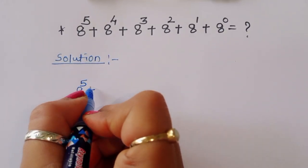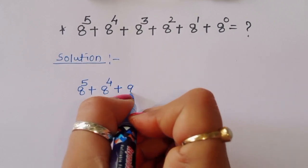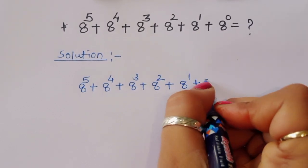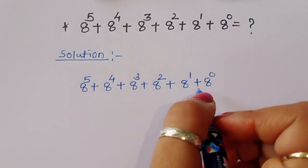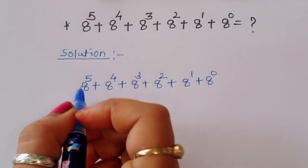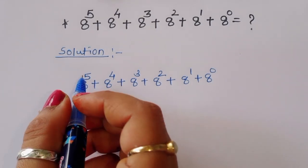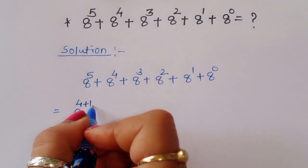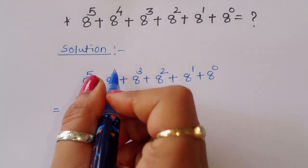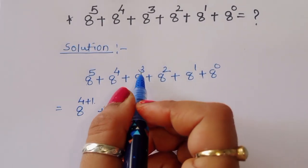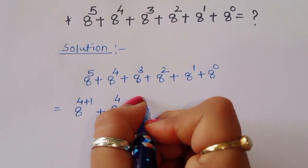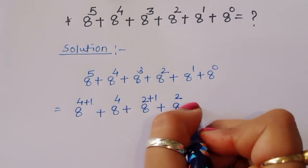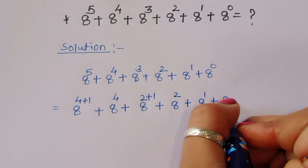We have 8 power 5 plus 8 power 4 plus 8 power 3 plus 8 power 2 plus 8 power 1 plus 8 power 0. So we can write 8 power 5 as 8 power 4 plus 1. So 8 power 4 plus 1, and similarly 8 power 3 can be written as 8 power 2 plus 1, plus 8 power 2 plus 8 power 1 plus 8 power 0.